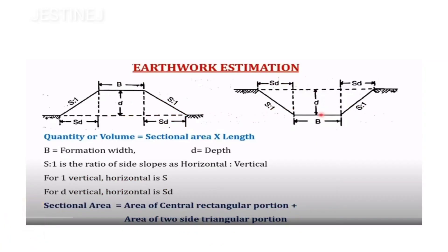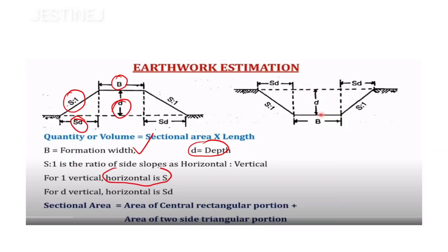The cross-section is in the shape of a trapezium. Here, b represents the formation width of the road cross-section, d represents the depth of that section, and s represents the side slope as horizontal to vertical — so for a vertical depth d, the horizontal dimension is s×d.